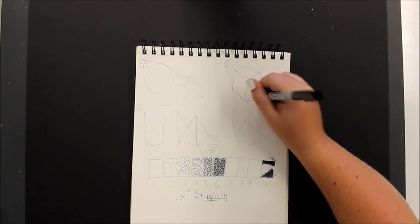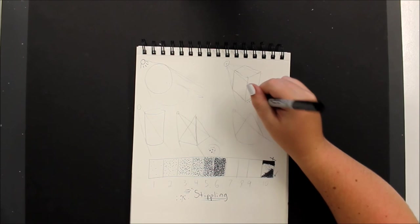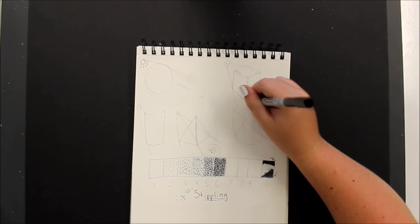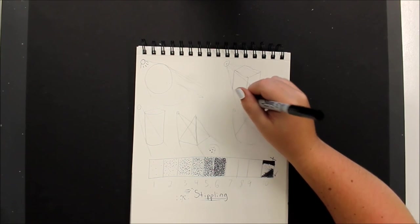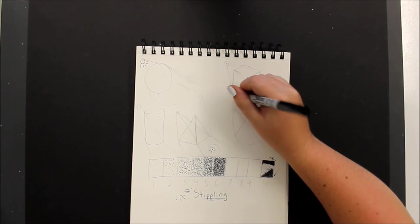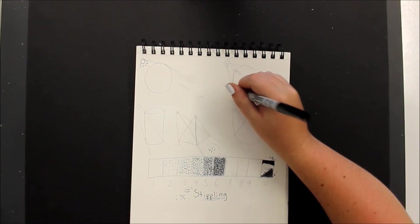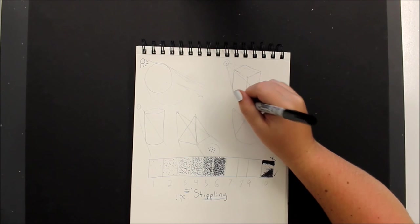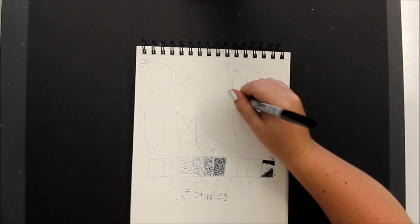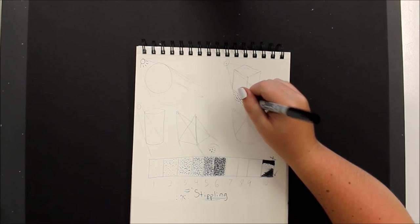So remember, always starting lighter. You don't want to have too much to start with, and you'll also notice I'm not tracing over my lines, just like we learned with our reliquaries and with our cross contour.